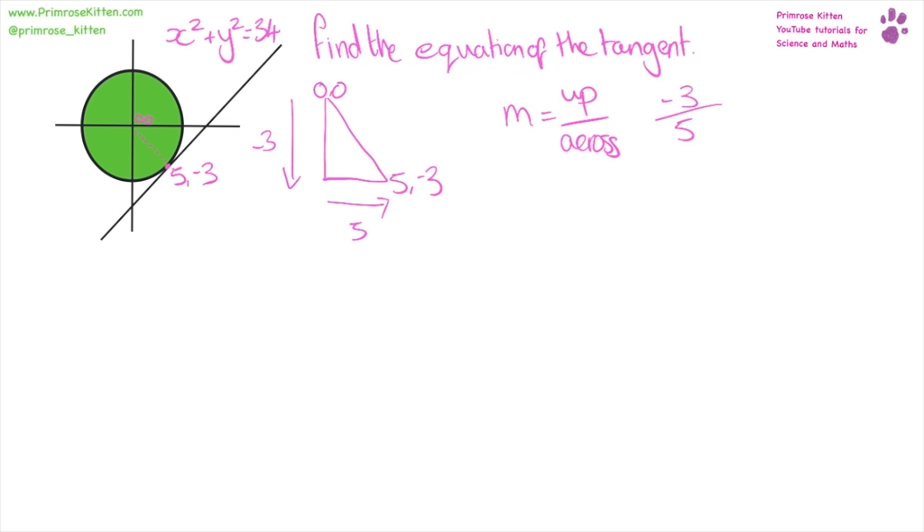Now, we know when we have perpendicular lines, this line and this line are perpendicular, the gradients multiply. So, gradient of one line times gradient of tangent multiply to give us minus one. So, we have our gradient of the circle, which is minus three over five times the gradient of the tangent equals minus one. So, the gradient of tangent is going to be minus one over minus three over five, giving us five over three as our gradient for the tangent.